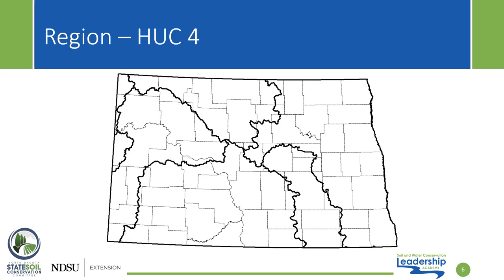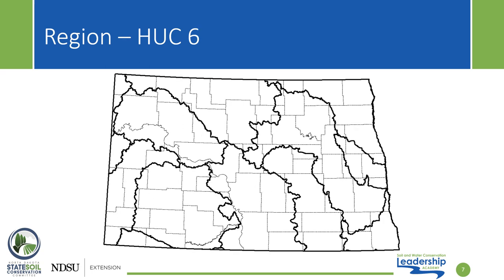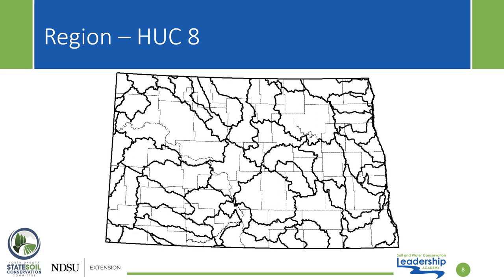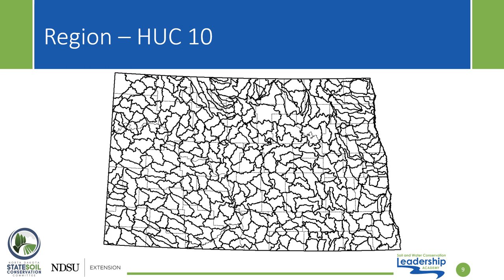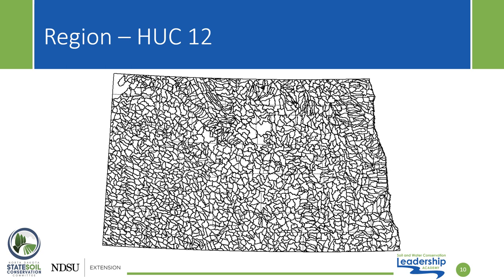Here is a depiction of our HUC-4 watersheds in North Dakota, comprising the Red River Basin in the east, the James River Basin in the east-central portion of the state, the upper and lower Missouri River basins in the southwest, and the Soros Basin in the north-central portion of the state. Here are the HUC-6, HUC-8, HUC-10, and finally the HUC-12 watersheds, which are significantly smaller than the HUC-2s we started with.